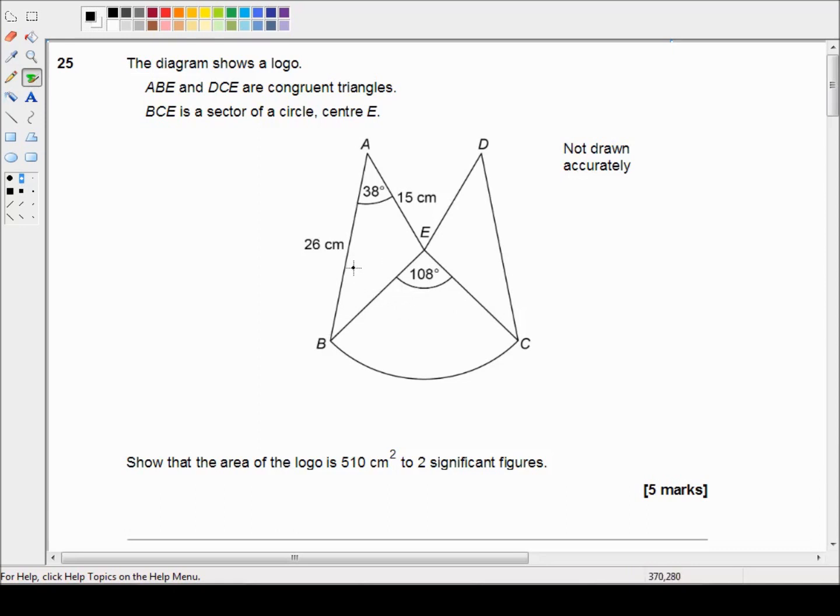All right, so let's start off getting the area of this logo. Let's start off with this triangle. The area of the triangle is a half of 26 times 15 times sine 38 degrees.